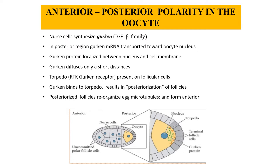How does anterior polarity form in the oocyte? The critical events occur during or start from the oogenesis process. Let's brush up on what a nurse cell is and how it forms. There is one oocyte towards the posterior end, and there are 15 nurse cells present towards the anterior end. The function of nurse cells is to provide mRNA and protein for the oocyte as nourishment.